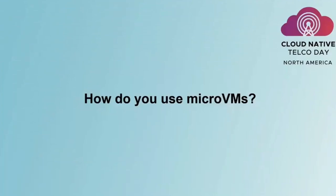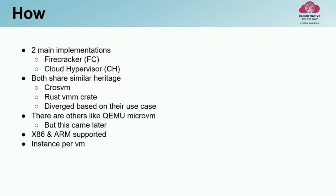How do you use micro VMs? The two main implementations are Firecracker and Cloud Hypervisor. They have similar heritage — both started from crosvm and both use the Rust VMM crate — but have diverged based on use case. There is also QEMU micro, but it has faded since Firecracker and Cloud Hypervisor emerged. Both support x86 and ARM. Essentially, you create one instance — one process — per VM.